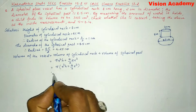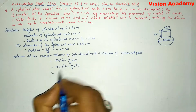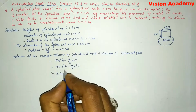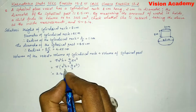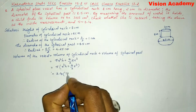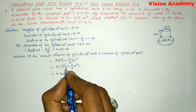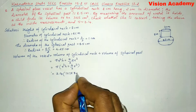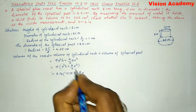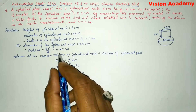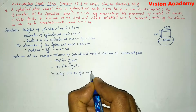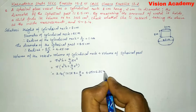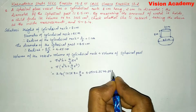Now let us substitute the values. Pi is given as 3.14, r² for the cylinder is 1 × 1 = 1, h is 8, plus (4/3) into r³ for the sphere, where r is 4.25, so 4.25 × 4.25 × 4.25.